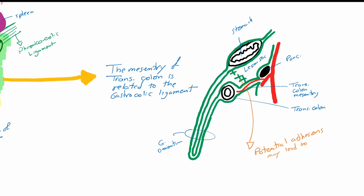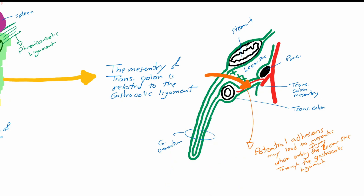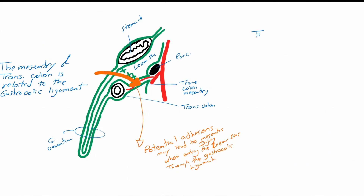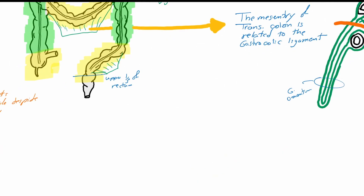The right approach to the transverse mesocolon — for example in cases of right or left hemicolectomy — is by elevating or flipping the greater omentum and then approaching the transverse mesocolon under the transverse colon.